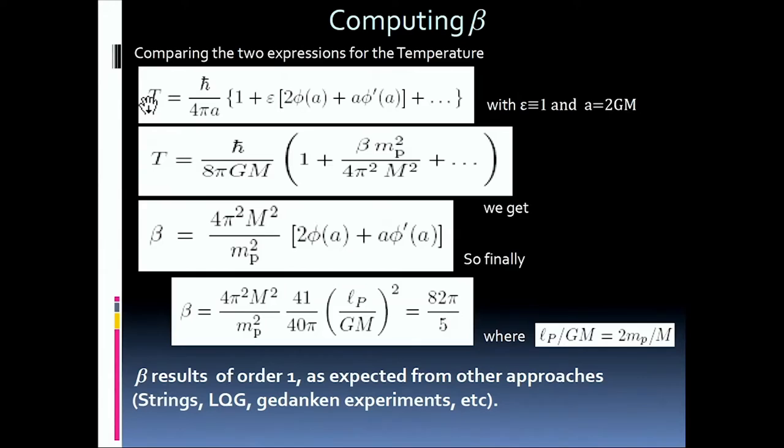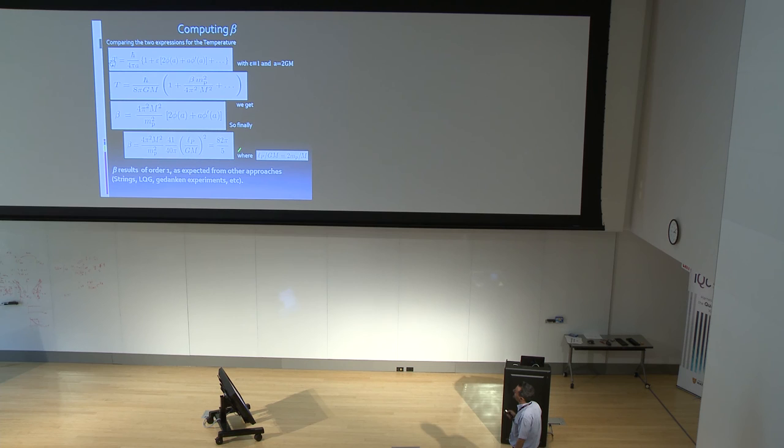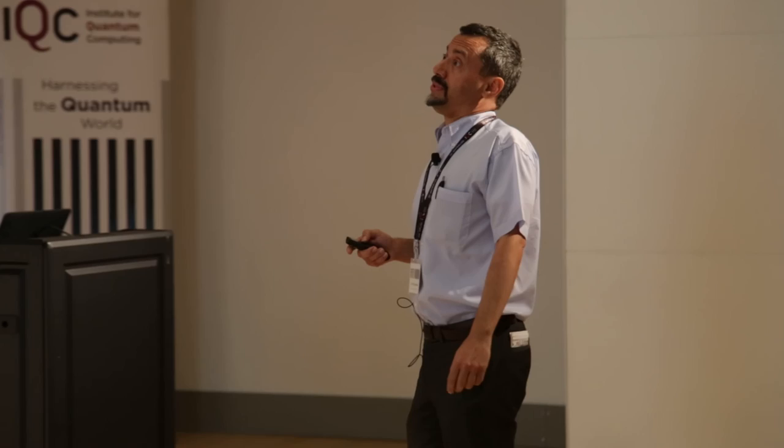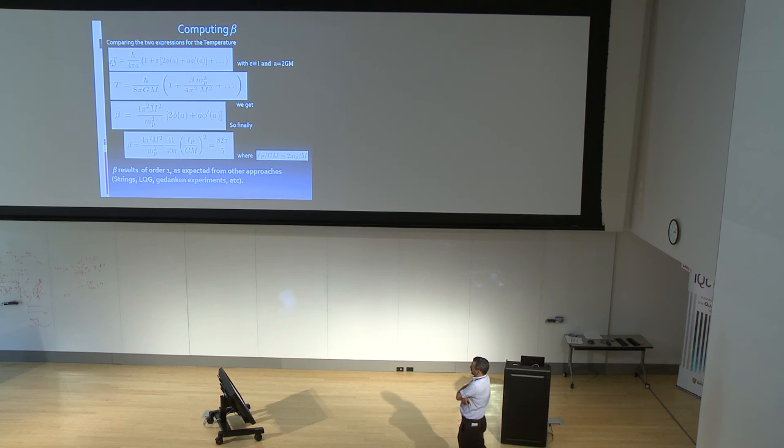And essentially what you get is the expression for beta. And beta turns out to be this object, this number here. It results to be of order one, as expected, so to say, because at least in specific models in string theory or also loop quantum gravity, beta is essentially always assumed to be order one. So this calculation seems to be consistent also with these other different approaches. And I think this is all.